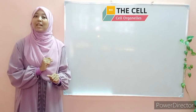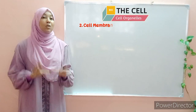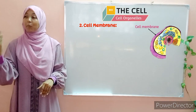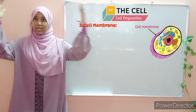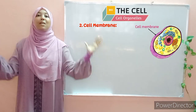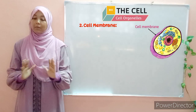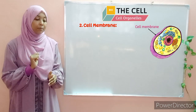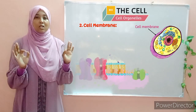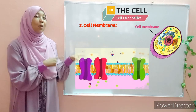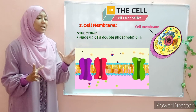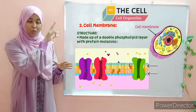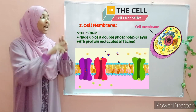Moving on to our next organelle — the cell membrane. The cell membrane is present in both plant cells and animal cells. In the case of plant cells, you have the cell wall as the outer covering and underneath it is where you have the cell membrane. The cell membrane has a unique structure. You have a double phospholipid layer — simply two layers of phospholipid — and between the phospholipids, you have protein molecules attached to them.